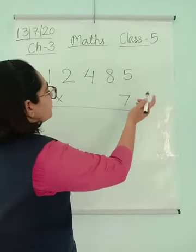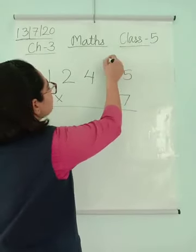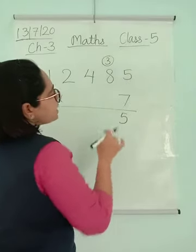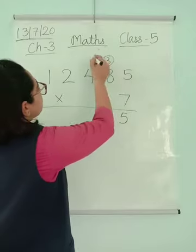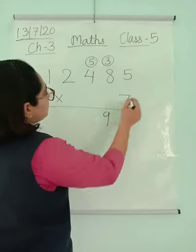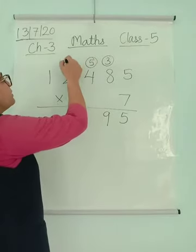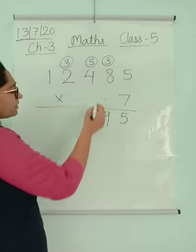You just have to multiply by 7. So 7×5 are 35. 7×8 are 56, 56 plus 3 is 59. 7×4 are 28, 28 plus 5 gives you 33.